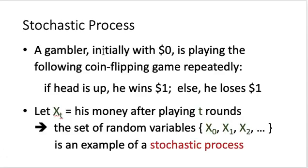Before we introduce Markov chain, let us introduce a related concept called stochastic process. We have a gambler who initially has no money and is playing the following coin flipping game repeatedly. If head comes up, the gambler wins $1; otherwise he loses $1. Let us define a random variable X_t to be his money after playing t rounds.